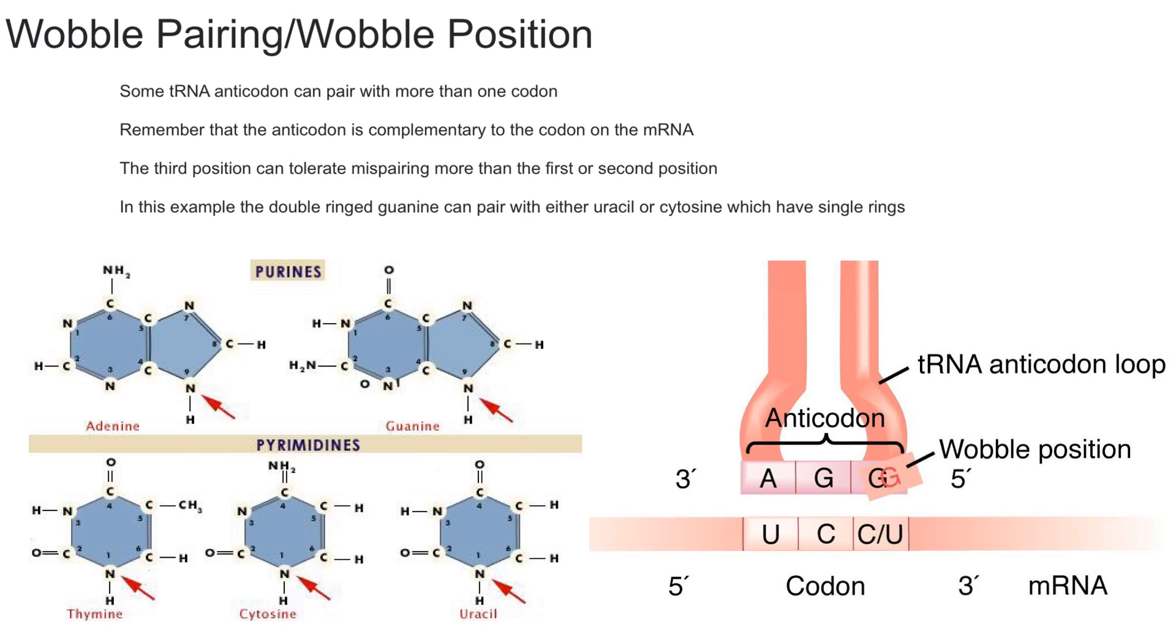I won't go over it now, but when you take biochem you might have to remember that if an adenine is in the third position, it can either pair with uracil or inosine, which is another base that you may learn about in biochem.